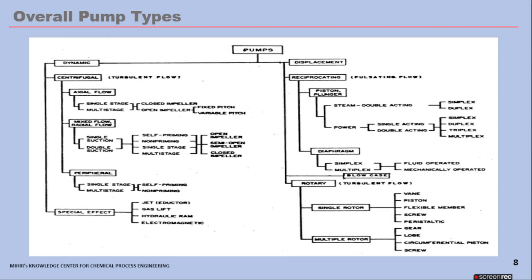The positive displacement pump operates by forcing a fixed volume of fluid from the inlet pressure section of the pump into the discharge zone, adding energy directly to a movable boundary which imparts the energy to the fluid. Kinetic pumps add energy directly to a rotating part in the form of velocity and convert that velocity to pressure. Under the kinetic category you have centrifugal pumps and regenerative pumps. Regenerative pumps are unique — the impeller is the only moving part, and they are used when high head and low flows are required. There are many types of pumps, broadly divided into dynamic and displacement types, each with a specific application area.